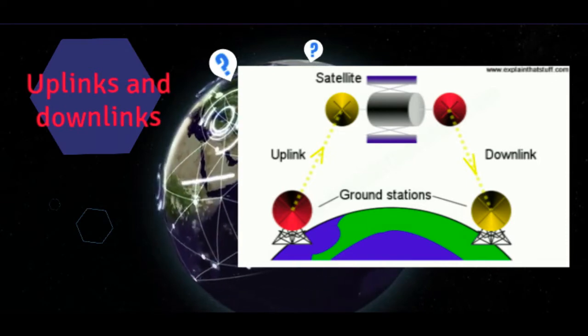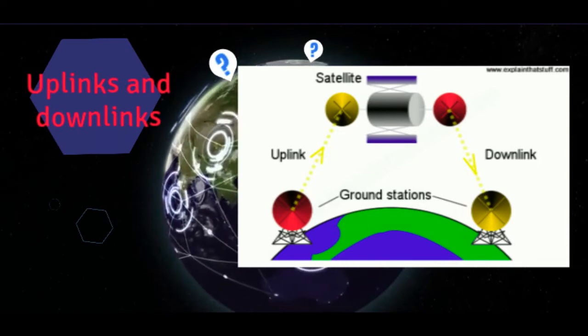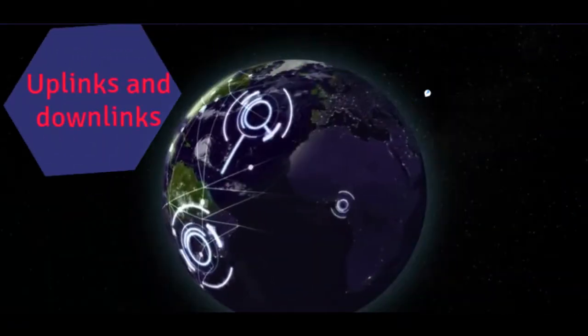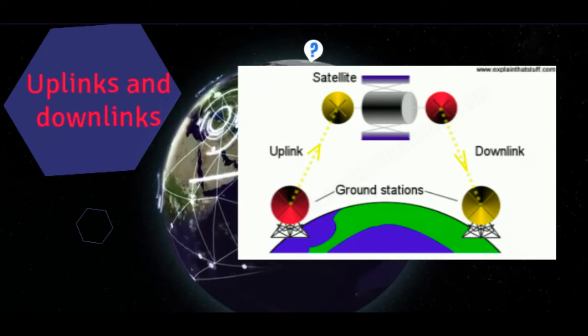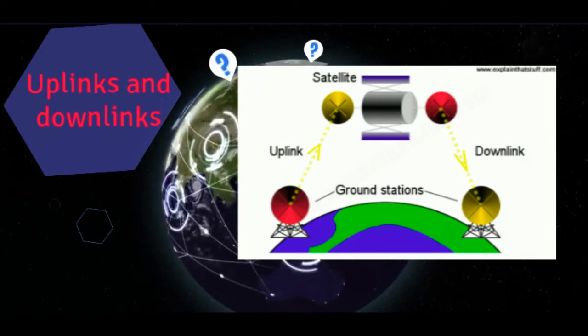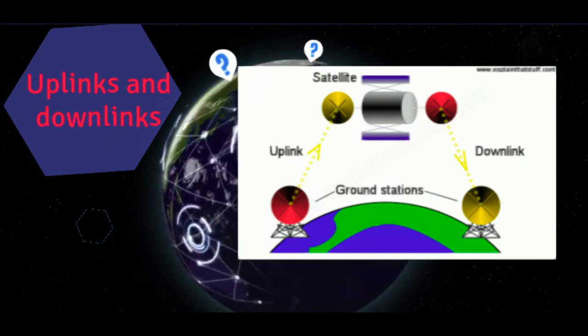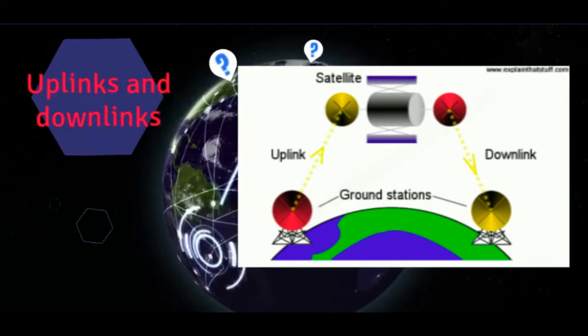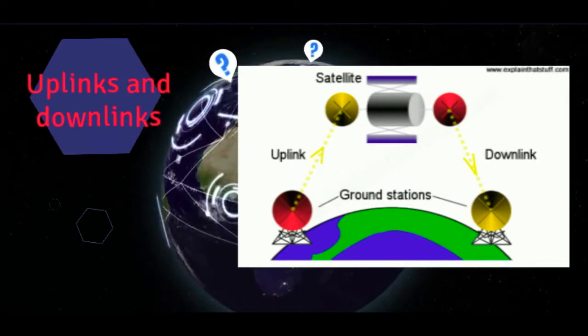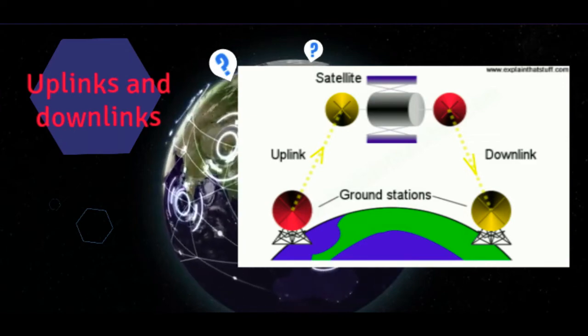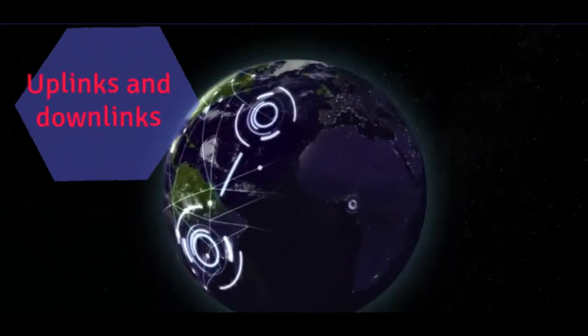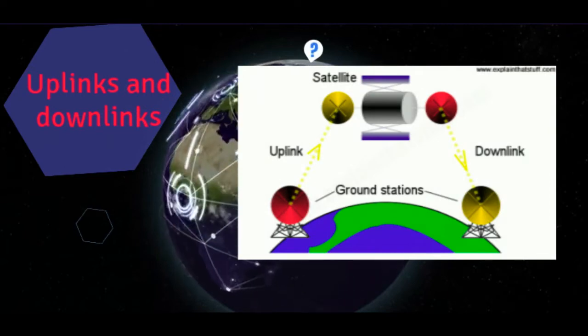Next, the satellite processes the data using a number of onboard transponders - radio receivers, amplifiers, and transmitters. These boost the incoming signals and change their frequency so incoming signals don't get confused with outgoing ones. Different transponders in the same satellite are used to handle different TV stations carried on different frequencies.